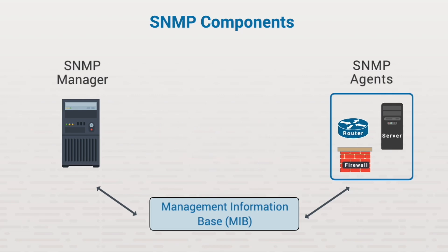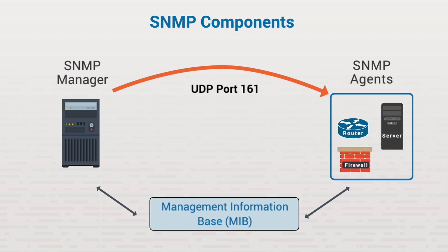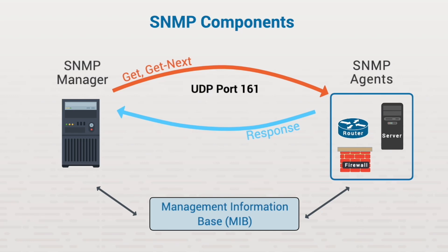SNMP communications can occur in three ways on your network. The first option is polling. Using poll mode, the SNMP manager periodically polls the SNMP agents to see what is happening with their respective devices using UDP port 161. These are referred to as GET messages. It queries them for specific pieces of information using the MIB — for example, if the monitored device is a server, it may query the agent to see what CPU utilization looks like.